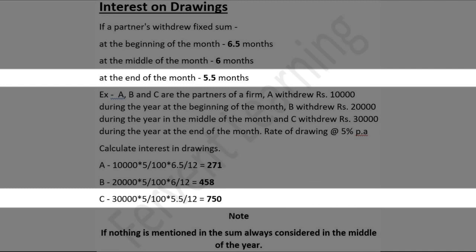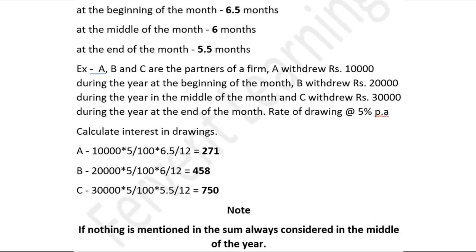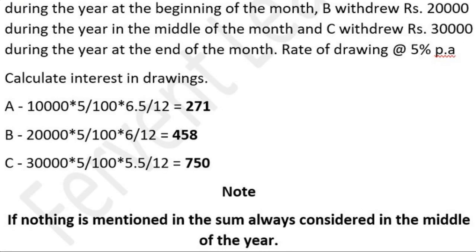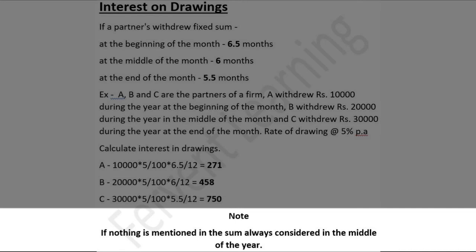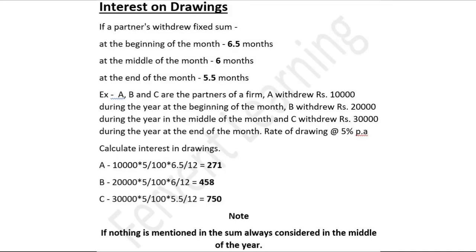The answer for C will be seven hundred fifty. So interest on drawing of A is two hundred seventy-one, B is four hundred fifty-eight, and C is seven hundred fifty. This way we calculate interest on drawing. If nothing is mentioned in the sum, we will always consider six months — that is, the middle of the month. We will not consider the beginning or end of the month. Always consider the middle of the month. Thank you.